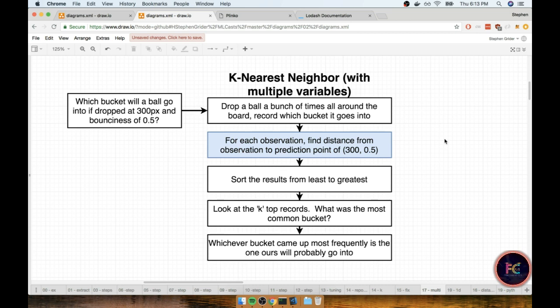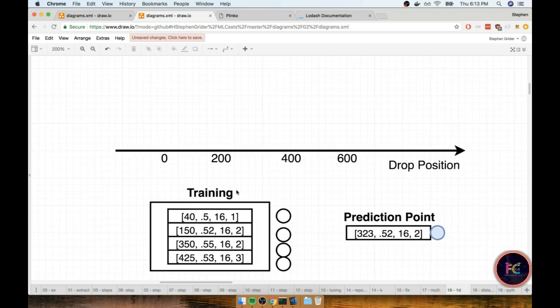Before we were trying to figure out how similar or dissimilar a drop position was to all of our different observations. We're still going to do the exact same thing, but now we're going to be finding the distance, so to speak, between multiple different features. To give you a really good idea of how this is going to work, let's first walk through exactly what was happening before when we were only taking the drop position into account.